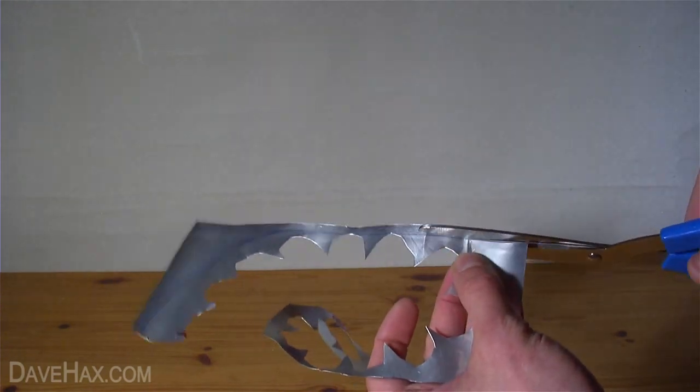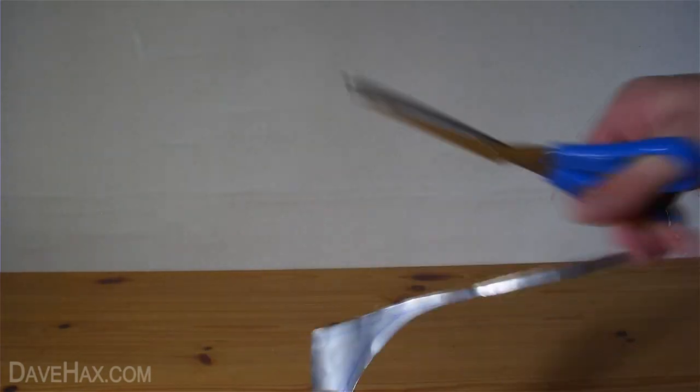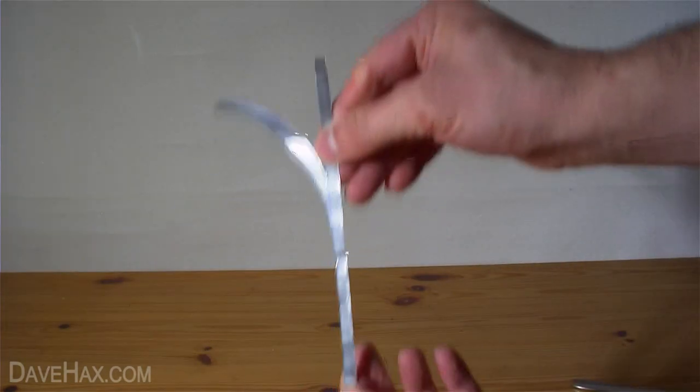Next, we're going to cut the stem out of the off-cut of our can, or you can use a new can if you prefer. It should look like this.